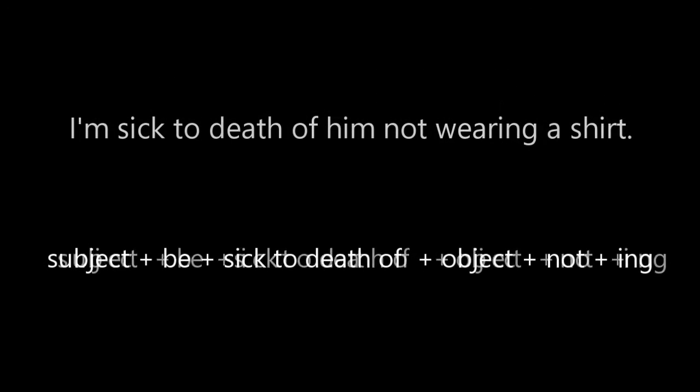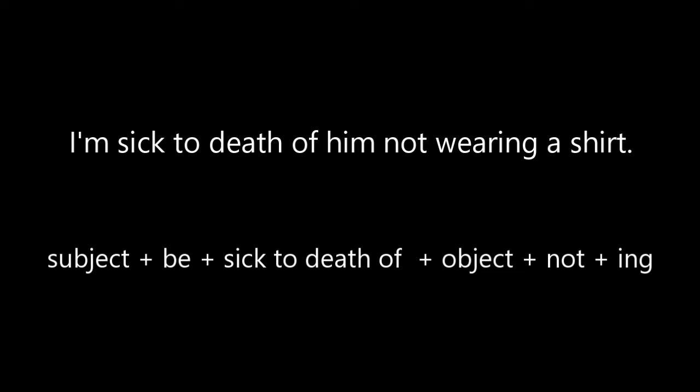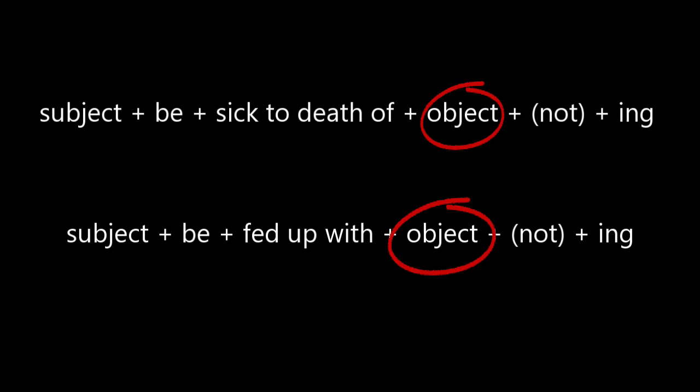Sally is not happy. Now I want you to pay attention to how Sally made one of those expressions negative. Sally said, 'I'm sick to death of him not wearing a shirt.' To make an action negative, all you need to do is put NOT in front of ING — the action. Also note, when you say that you are sick to death of someone else doing an action, we simply insert the object: 'I am sick to death of him complaining. I am sick to death of him eating my food. I am fed up with him not wearing a shirt.'